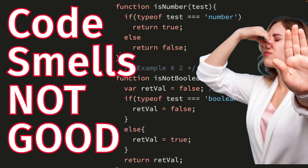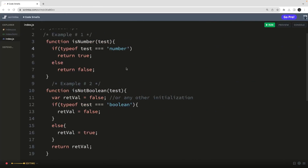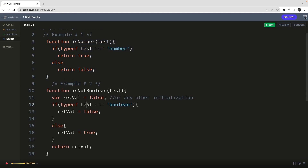Welcome back to another brand new video. In this video we are going to talk about code smells. In programming, a code smell is a synonym that indicates a deeper problem in your code. According to Martin Fowler, a code smell is a surface indication that something is wrong deeper down. Your code may work as expected, but code smell doesn't mean your production or application will crash — it just means there's a better way to write the code.